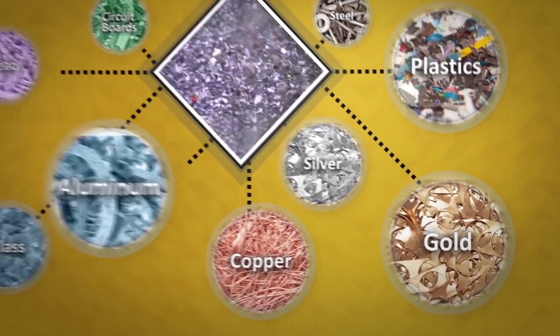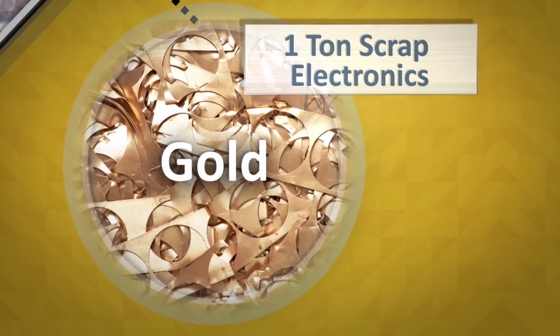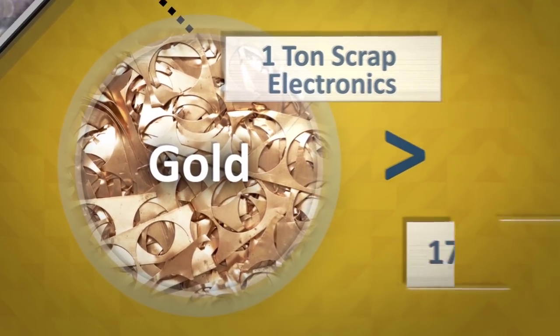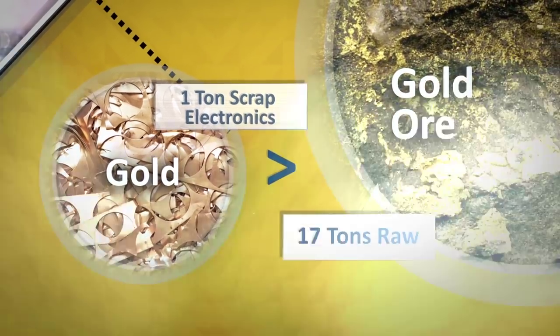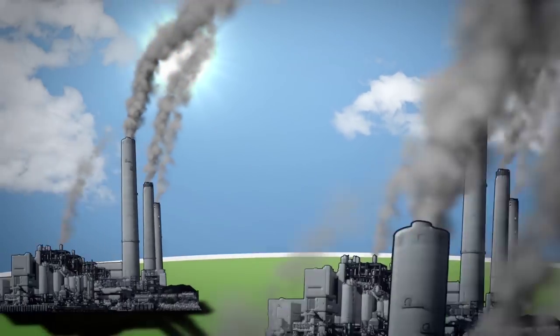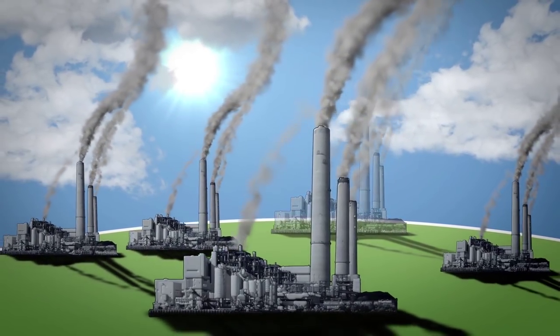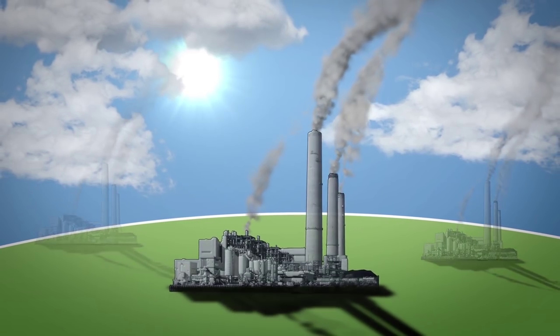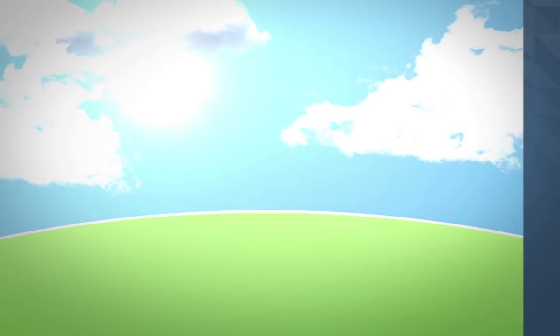For example, one metric ton of electronic scrap from personal computers contains more gold than that recovered from 17 tons of gold ore, all of which helps conserve natural resources and reduce manufacturers' energy usage, offsetting millions of tons of greenhouse gas emissions.